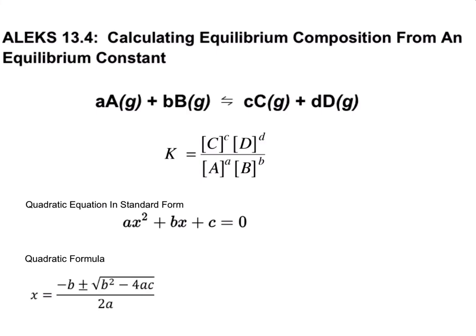We're going to work on a problem that deals with calculating equilibrium composition from an equilibrium constant. We can write that equilibrium constant expression from a balanced equation, where K equals the concentration of the products raised to the power of the coefficient over the concentration of the reactants raised to the power of their coefficients. We're going to rearrange our K expression into the quadratic equation in standard form, and from there use the quadratic formula to solve for our unknown.